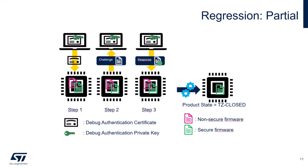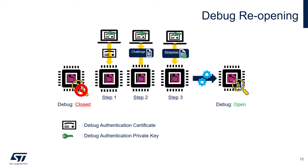In partial regression, debug authentication erases non-secure user flash memory, non-secure SRAM, and non-secure OB keys data. After partial regression, the STM32 is in the trust zone closed product state, and the STM32 DHUK is changed. Secure storage sections protected by the DHUK extracted before regression cannot be reused after regression. Note that the STM32 that does not support trust zone, or when trust zone is not enabled, does not support partial regression. Only debug authentication by certificate supports debug reopening, which does not change the STM32 product state. Note that this process is temporary — power cycling the STM32 disables debug reopening and debug access is closed again.